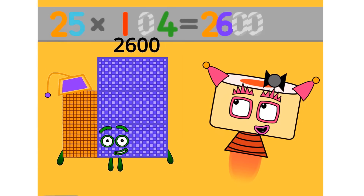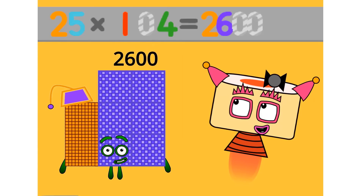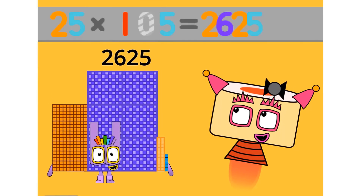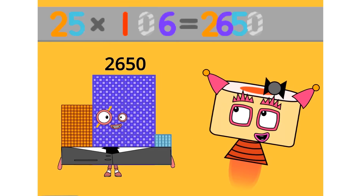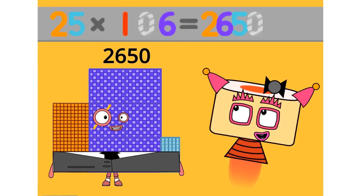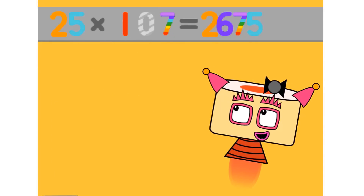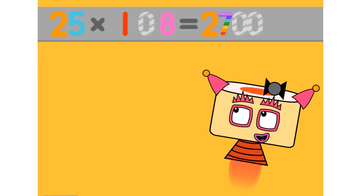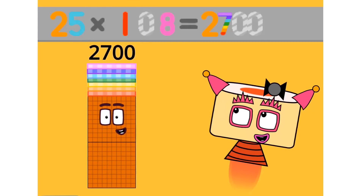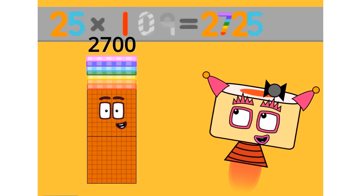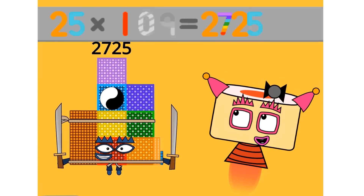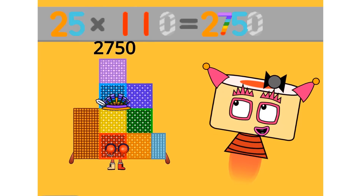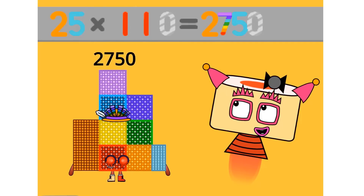25 times 104 equals 2600. 25 times 105 equals 2625. 25 times 106 equals 2650. 25 times 108 equals 2700. 25 times 109 equals 2725. 25 times 110 equals 2750.